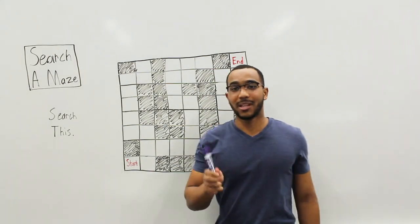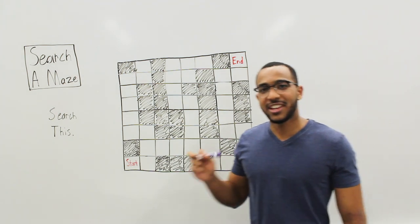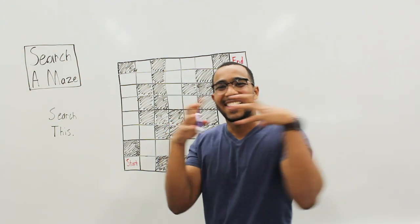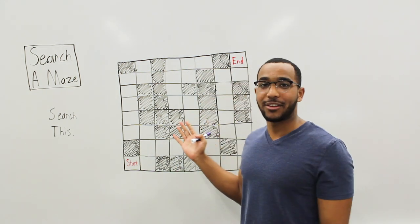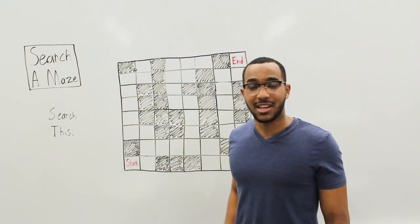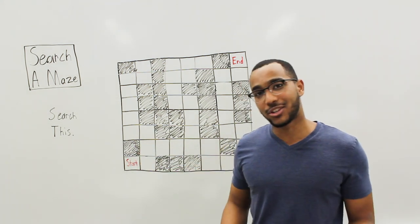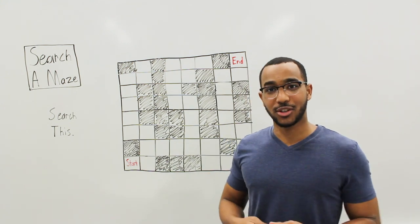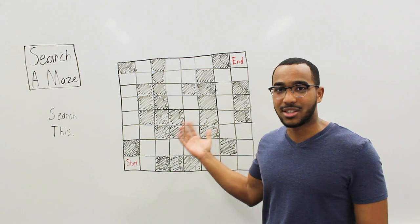Today we have a fundamental graph question. We don't see a graph here, but whenever we have something with nodes, with relationships, with connections, we can represent those connections with a graph. When we have a maze like this, we can represent each cell as a node and each adjacent relationship as an edge. Whenever we can represent nodes and edges, we can create a graph structure. This is a maze.